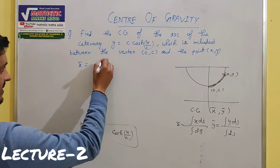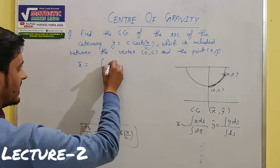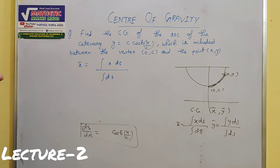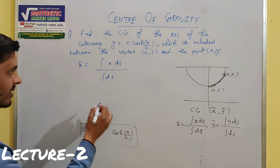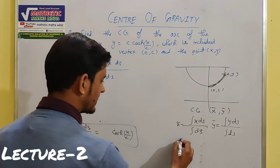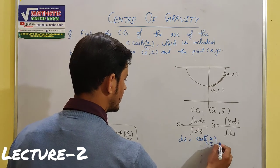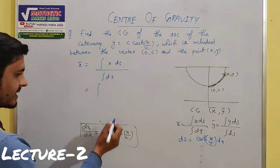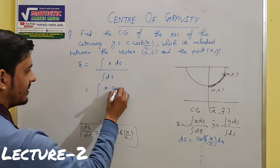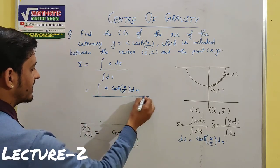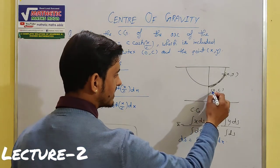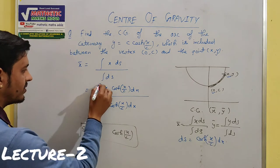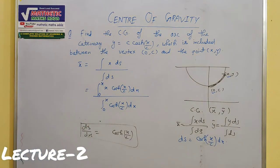Now we find x̄. The formula is x̄ = ∫x·ds / ∫ds. Substituting ds = cosh(x/c)·dx, the numerator becomes ∫x·cosh(x/c)·dx and the denominator is ∫cosh(x/c)·dx. The limits for x go from 0 to x. So we have x̄ = [∫₀ˣ x·cosh(x/c)·dx] / [∫₀ˣ cosh(x/c)·dx].